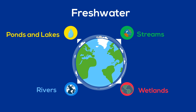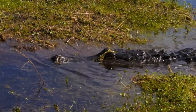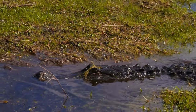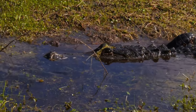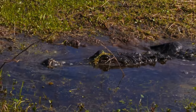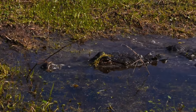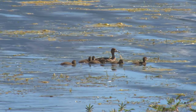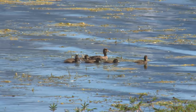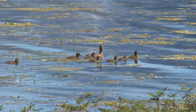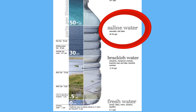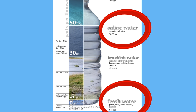Plants and animals in these freshwater biomes are adapted to the low salt content of freshwater and are unable to survive in areas of high salt concentration. Saltwater is 30 to 50 parts per thousand, where freshwater is only 0.5 parts per thousand.